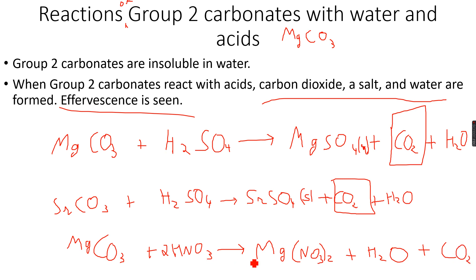So all the nitrates of Group 2 elements are soluble. So magnesium nitrate, calcium nitrate, strontium nitrate, barium nitrate, all of them are soluble in water. So even though we see a trend with hydroxides and sulfates, we see no trend with nitrates. All nitrates of Group 2 elements are soluble.